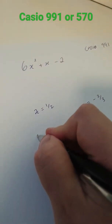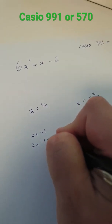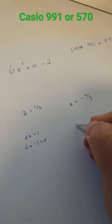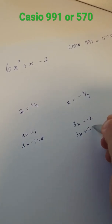Now what I want to do is rearrange these. So I get 2x equals 1, 2x minus 1 equals 0, 3x equals negative 2, 3x plus 2 equals 0.